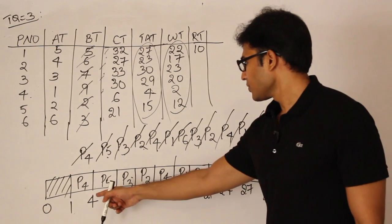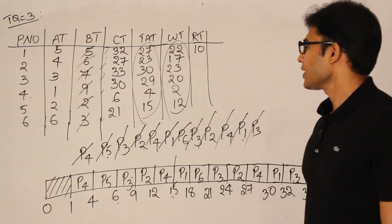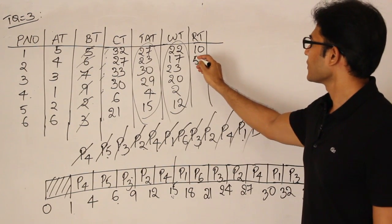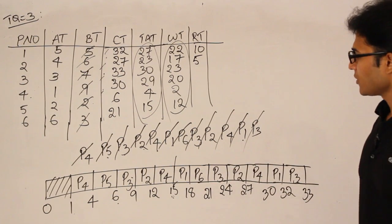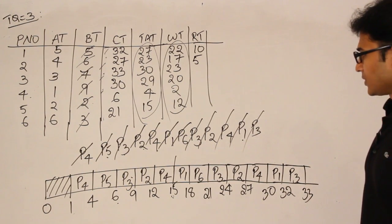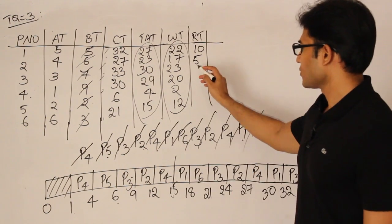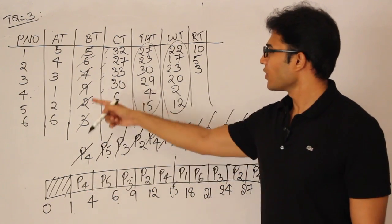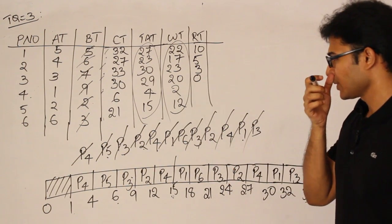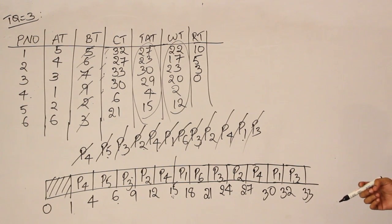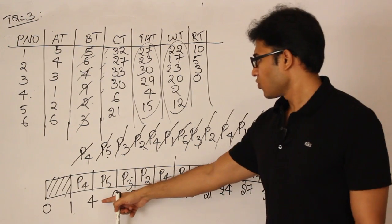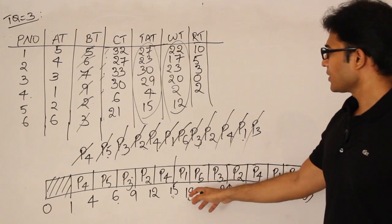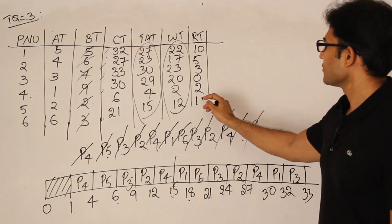Response times: P1 was first scheduled at 15, arrived at 5 — response time = 10. P2 was first scheduled at 9, arrived at 4 — response time = 5. P3 was first scheduled at 6, arrived at 3 — response time = 3. P4 was first scheduled at 1, arrived at 1 — response time = 0 (responded immediately). P5 was scheduled at 4, arrived at 2 — response time = 2. P6 was first scheduled at 18, arrived at 6 — response time = 12.